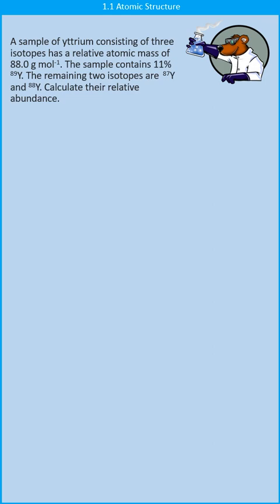Today we're back with atomic structure and thinking about how the relative abundance of some different isotopes can contribute to the relative atomic mass. In this question we've got three isotopes and we know what the masses of those isotopes are, but we don't know the abundances of two of them.